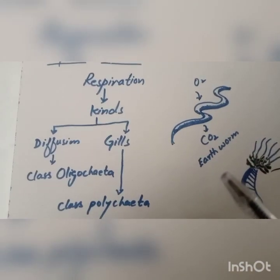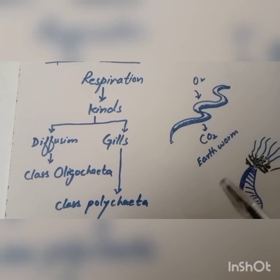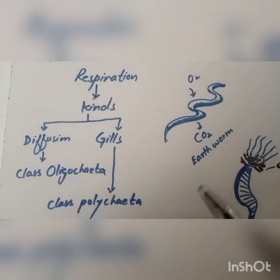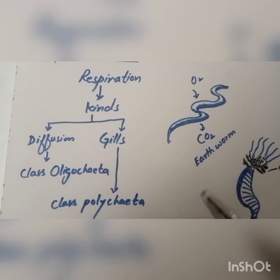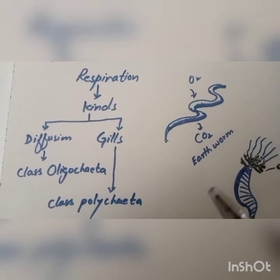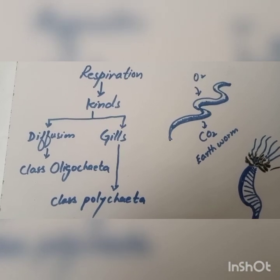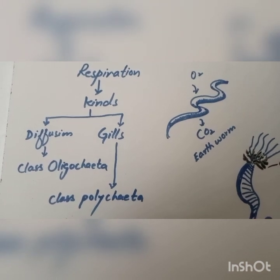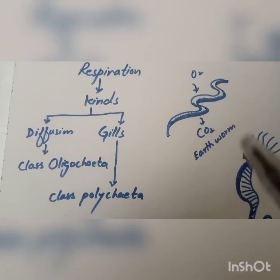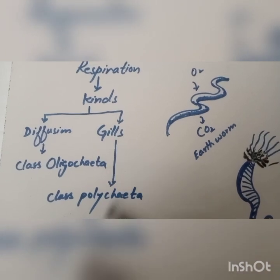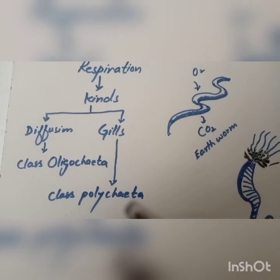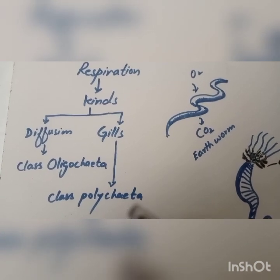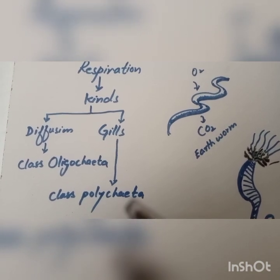Respiration in most species of annelids takes place through their body wall, because the body wall is richly supplied with capabilities to absorb and transport oxygen. While some marine forms respire through parapodia, and a few have gills, like class Polychaeta.